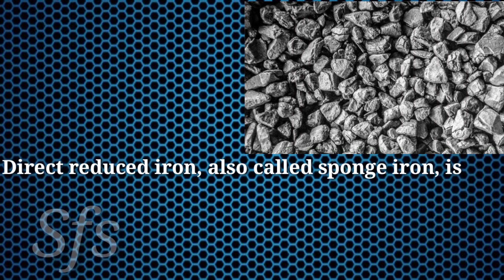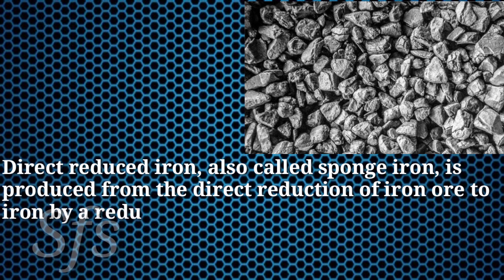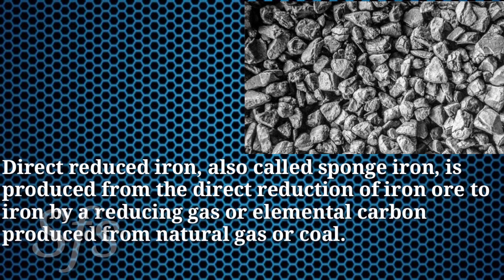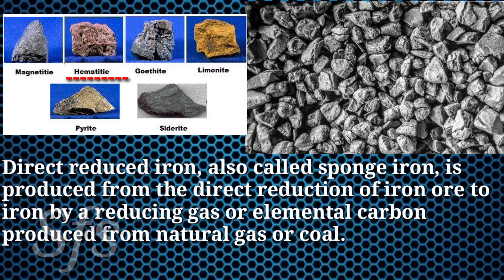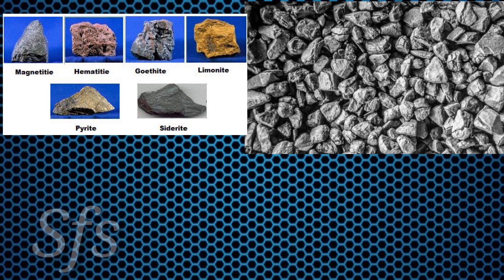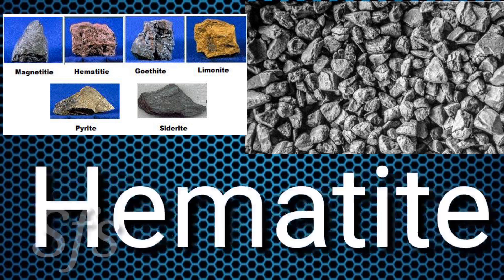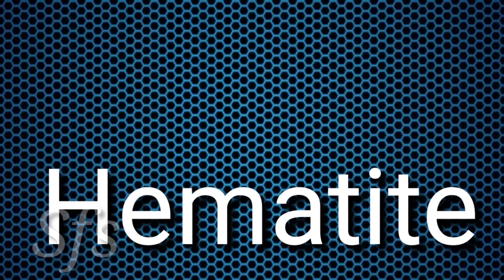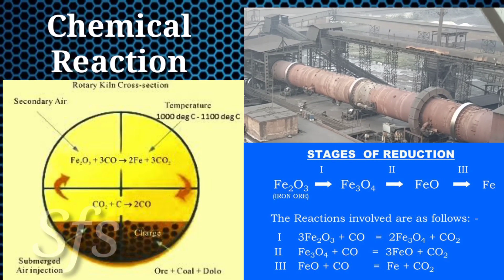Direct reduced iron, which is also called sponge iron, is produced from the direct reduction of iron ore to iron by a reducing gas or elemental carbon produced from natural gas or coal. For manufacturing sponge iron, iron ore which is called hematite is used, and in this process reduction of iron ore — meaning removal of oxygen — is done in a furnace called a rotary kiln.